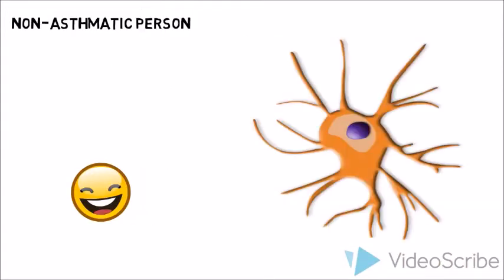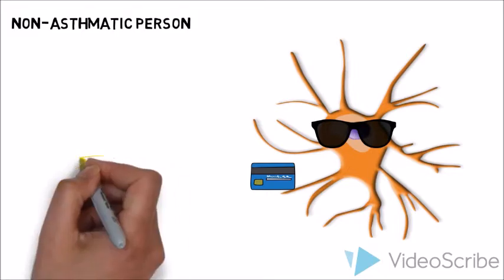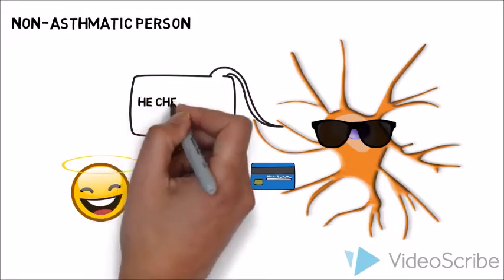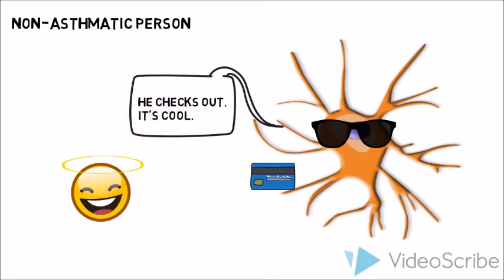In these instances, the immune cells, acting as bouncers, would check for potential threats to our health. Once their innocent status is established and they are deemed non-threatening, the individual's immune system carries on and there is no allergic reaction.